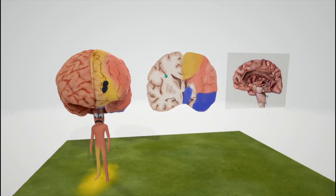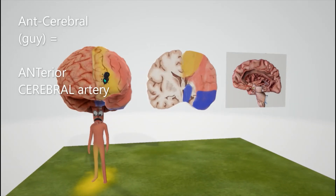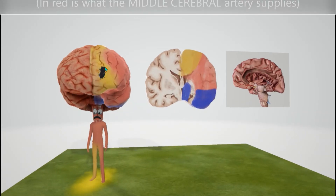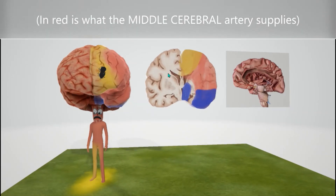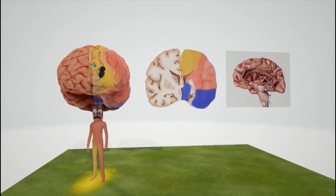On this guy's brain, he is the anterior cerebral guy because he's got an ant on his cerebrum — a mnemonic for anterior cerebral artery. The yellow over here is the anterior cerebral portion. In the next video, we'll talk about what's in red — the middle cerebral artery. But the yellow is for the anterior cerebral artery.